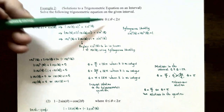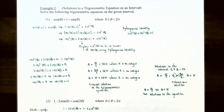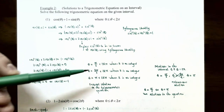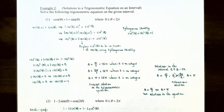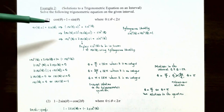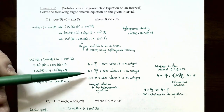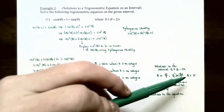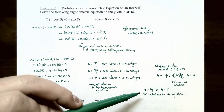Since we want values of theta between zero and two pi, we let k equal zero for each general solution, giving theta equals pi over two, three pi over two, and pi. However, checking theta equals three pi over two in the original equation: cosine of three pi over two is zero, so the left side is one, but sine of three pi over two is negative one, so the right side is negative one. These don't match, so three pi over two is an extraneous solution. The only valid solutions are theta equals pi over two and theta equals pi.